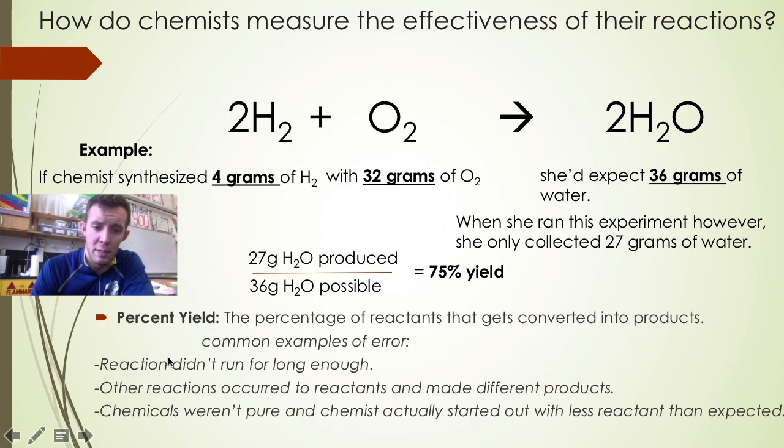And some common reasons why a reaction would yield less than a hundred percent of expected products: maybe the reaction didn't run for long enough, or other reactions occurred to the reactants at the same time and made a different product other than the one we were looking for.